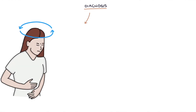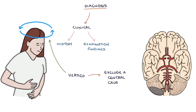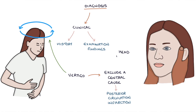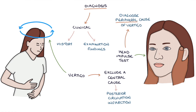A clinical diagnosis is based on the history and examination findings. Whenever a patient presents with vertigo, it's important to exclude a central cause of the vertigo — meaning vertigo caused by a problem in the brain, such as a posterior circulation infarction, which is a type of stroke. The head impulse test can be used to diagnose peripheral causes of vertigo resulting from problems with the vestibular system, for example vestibular neuronitis or labyrinthitis.